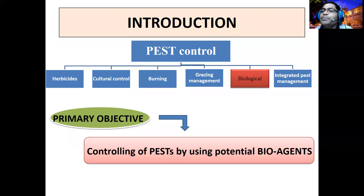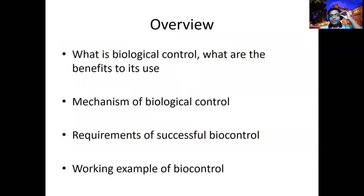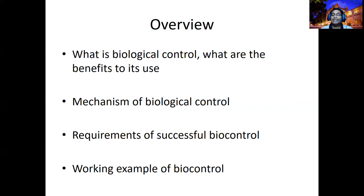The living organism may be an insect, a predator, a non-insect, or a pathogen — anything used to manage the pest is called biological control. From this class you will learn what biological control is, the benefits and mechanisms of biological control agents to suppress pest and disease populations, requirements for successful biological control, and current commercially available examples.